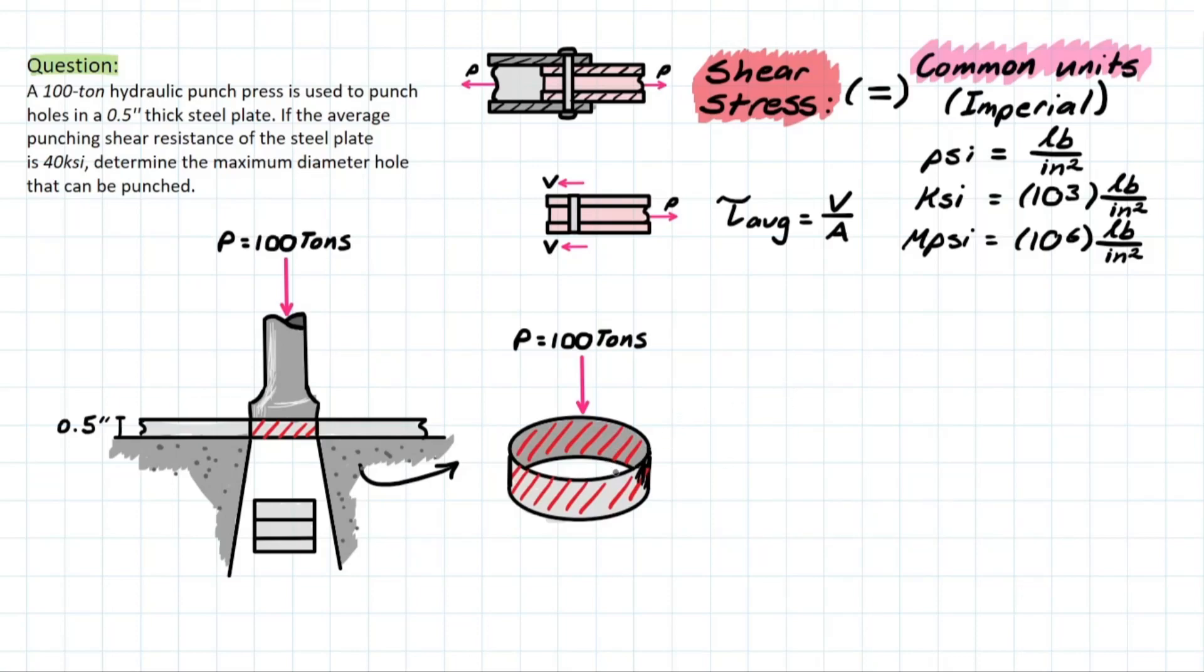So, what else do we need to discuss before we hop into the problem? Well, why are we determining the max diameter from 40 KSI? Is there an explanation for why we know it's going to be the max diameter? Well, if we know that shear stress has to be greater than or equal to 40 KSI in order to punch a hole through the steel plate, this means that this is the lowest achievable stress in order to do so, 40 KSI.